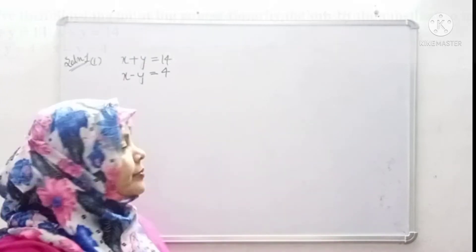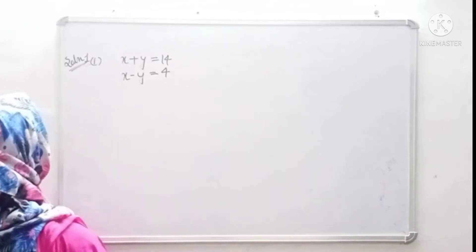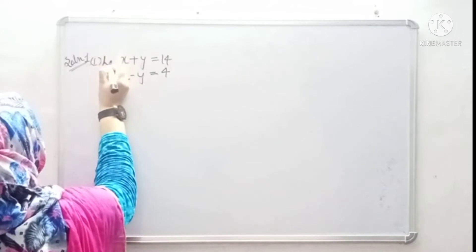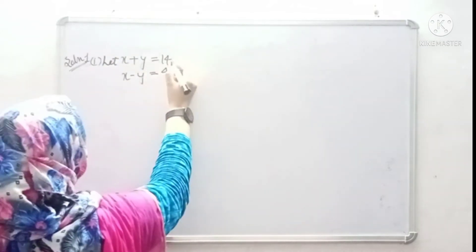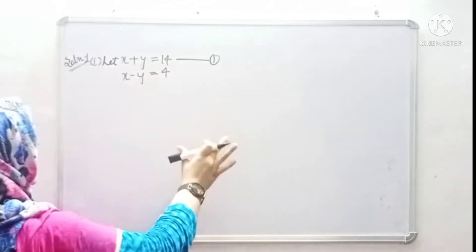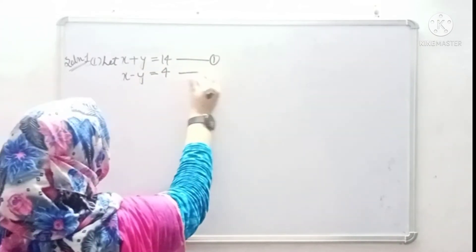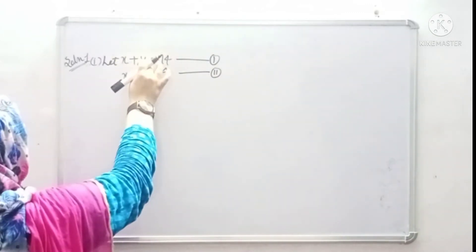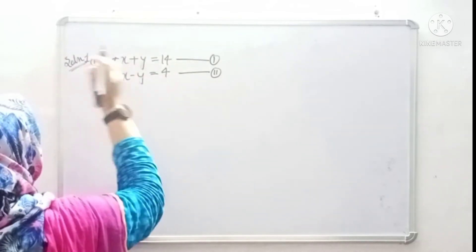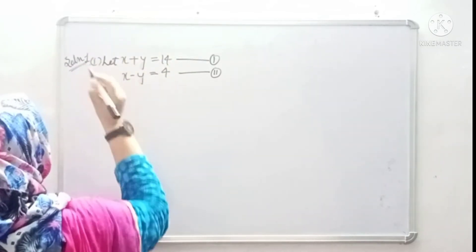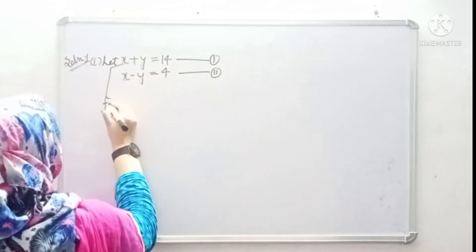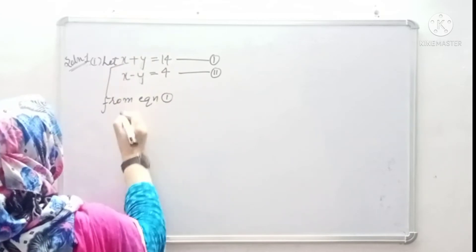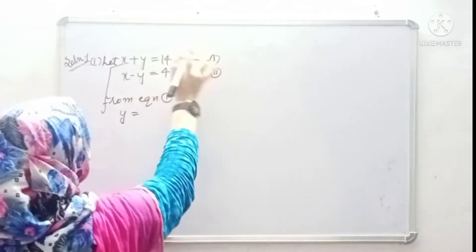Let's understand. We suppose equation 1 is: x plus y equals to 14. And we suppose equation 2 is: x minus y equals to 4. We have two variables, x and y. We have to find one variable at a time. So from equation 1, we find: y equals to 14 minus x.